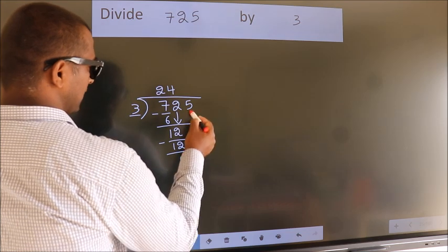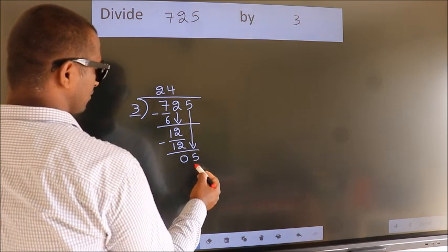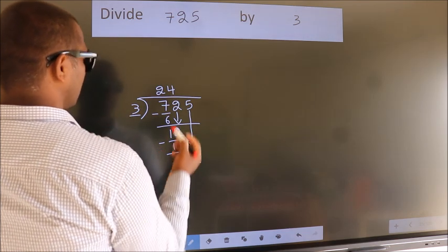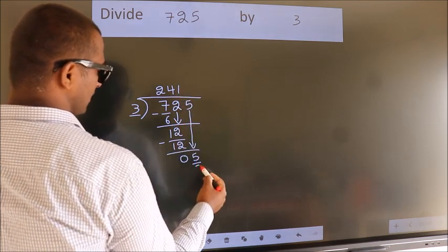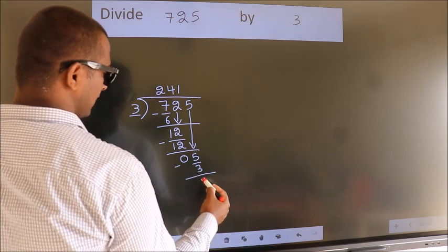After this bring down the beside number. So 5 down, so 5. A number close to 5 in 3 table is 3 times 1, 3. Now we subtract. We get 2.